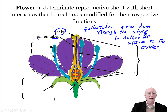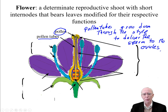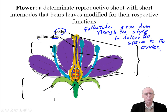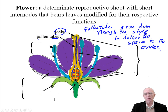The pollen tubes are sperm delivery devices, same as they are in the gymnosperms. It works a little bit differently in the angiosperms, but the basic idea is the same. They grow down through the style, deliver the sperm to the ovules, and the sperm is then delivered right up to the egg for fertilization — the egg being in the ovule.